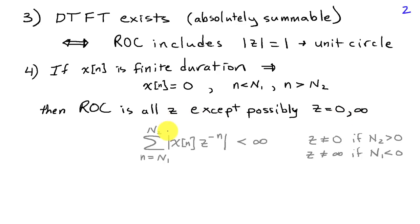For the Z-transform to exist, it has to be absolutely summable. That's the sum from little n equals capital N1 to capital N2 of the absolute value of x of n, z to the minus n, and that has to be less than infinity. Since this sum has a finite number of terms, it's going to converge if all the terms in the sum are finite.